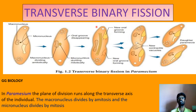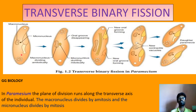The second type is transverse binary fission, where the division takes place along the transverse axis, as shown here. The example selected is another protozoan, a ciliate commonly called Paramecium. Paramecium has two major nuclei as well as a minor nucleus. Both these nuclei divide to produce two daughter cells. The plane runs along the transverse axis, and the macronucleus divides by amitosis. Thereby one parental cell produces two daughter cells, and this type is called transverse binary fission.